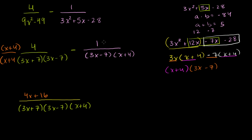And then what do I have to multiply this guy by to have the same denominator? Well, I have to multiply it by 3x plus 7. So I also have to multiply the numerator by 3x plus 7. So this is 4x plus 16 minus 1 times 3x plus 7, or minus 3x plus 7 is the same thing as minus 3x minus 7, just distributing the negative sign.